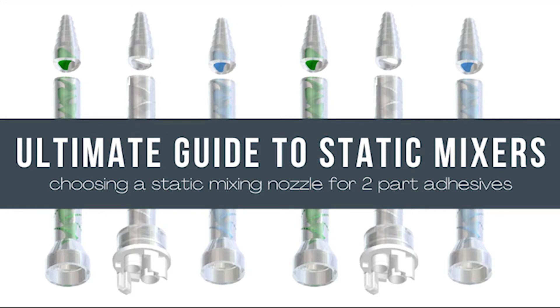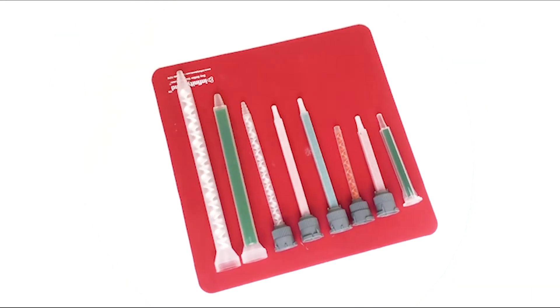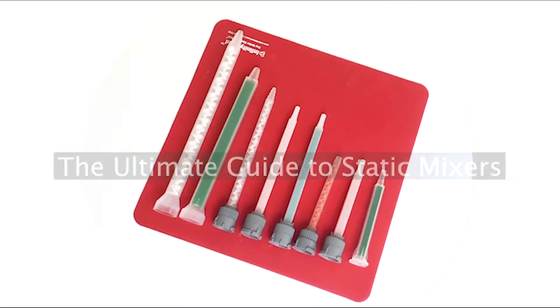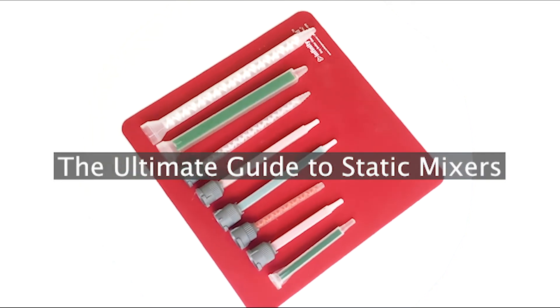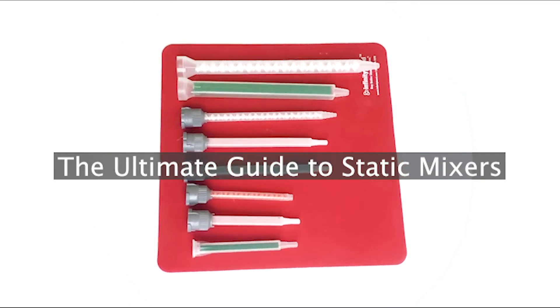Two-part adhesives like epoxies, MMAs, urethanes, and silicones require plastic static mixer nozzles to mix and dispense the A and B sides. Static mixer nozzles are an excellent way to save time and money over trying to mix and dispense two-part adhesives by hand.